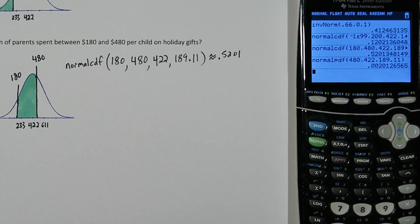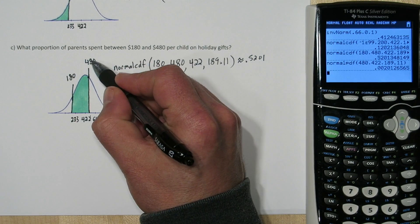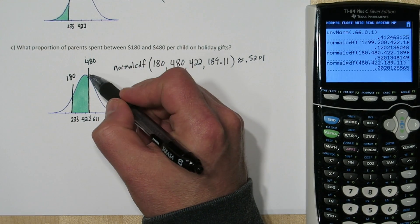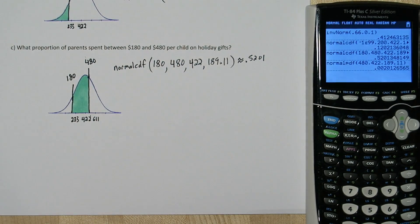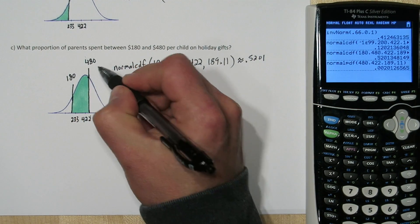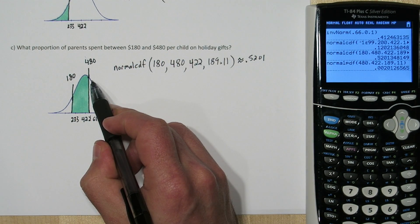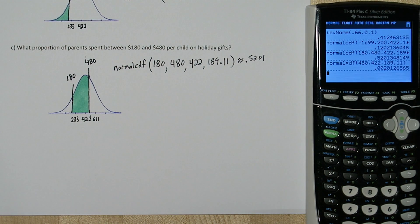What this value actually is, is the height of the density curve at that x coordinate 480. So it's just the y coordinate. So the coordinates of this point right here are actually 480 and that weird y coordinate we just got. I have never seen this piece of information be useful in an AP statistics course. So just avoid normal PDF.